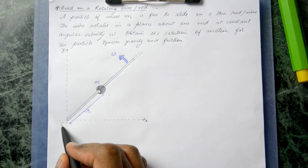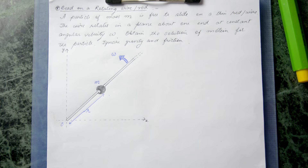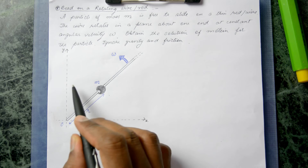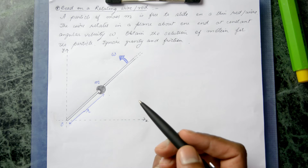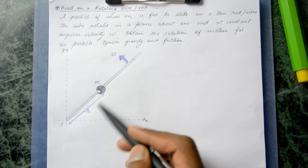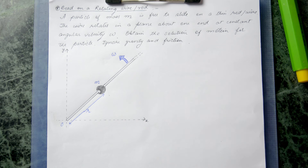Let R be the radial displacement of this point mass particle from the origin. We want to obtain the radial solution for the position of the particle. In this video, I am going to solve this using the Lagrangian approach, applying the Euler-Lagrange equations.